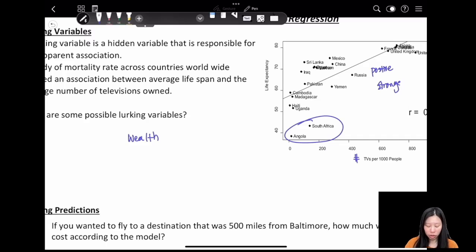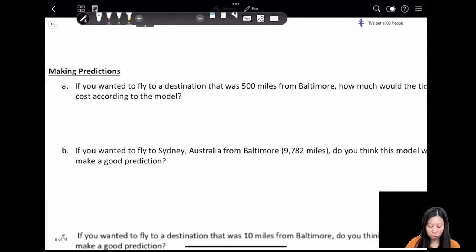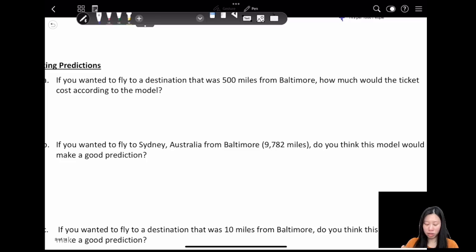The next part is making predictions. Again, we use the Baltimore example. If we wanted to fly to a destination that was 500 miles from Baltimore, how much would the ticket cost according to the model? The model is y-hat equals 0.1373 times 500 plus 18.76, so that's approximately $150.41.